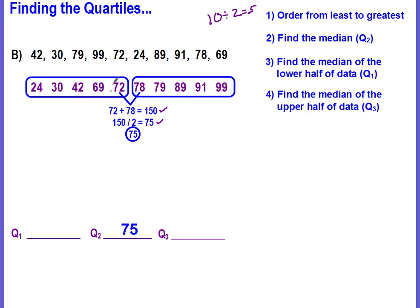To find Q1, it's the median of the lower half of the data. There are five numbers, so we can easily find the median, which is 42. This is quartile one. For the upper half, the median is 89 — this is our quartile three. I find it easiest to put a box around the upper and lower half of your data. If there's a number in the middle, that's your median or Q2. If there's no number in the middle, you find the mean of the two middle numbers.